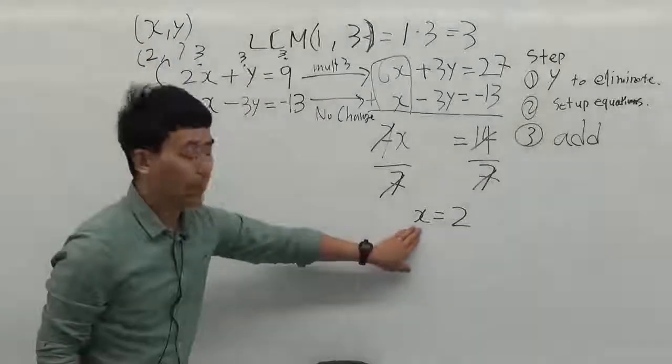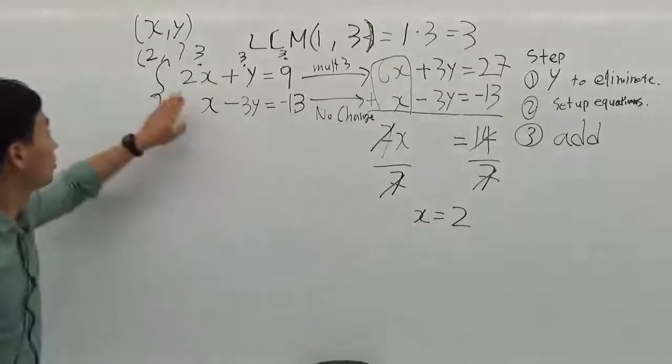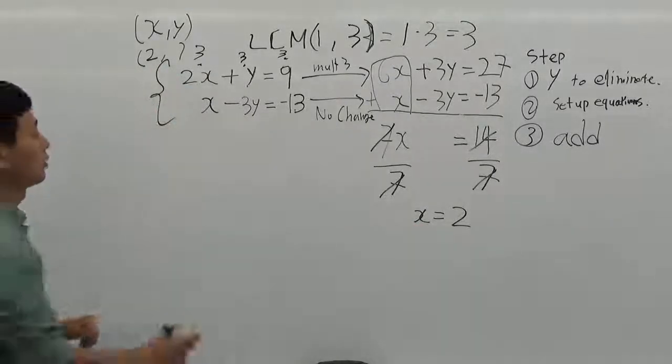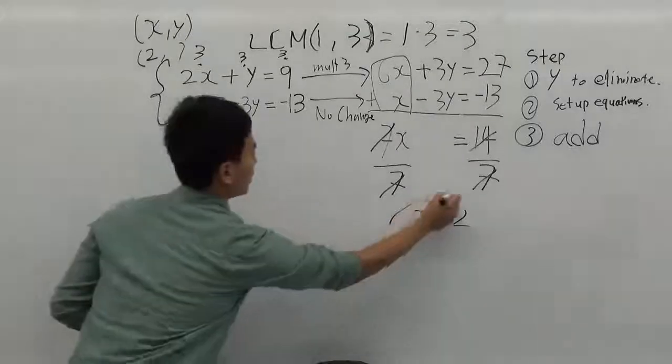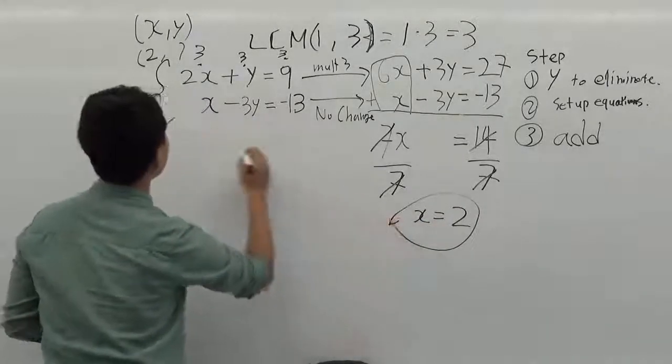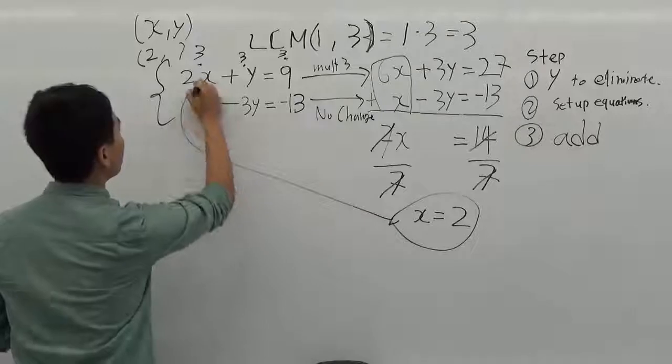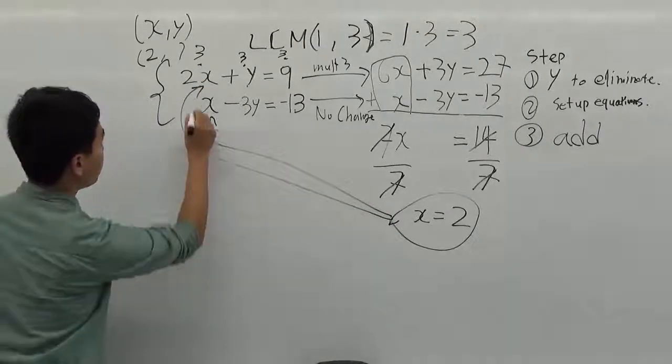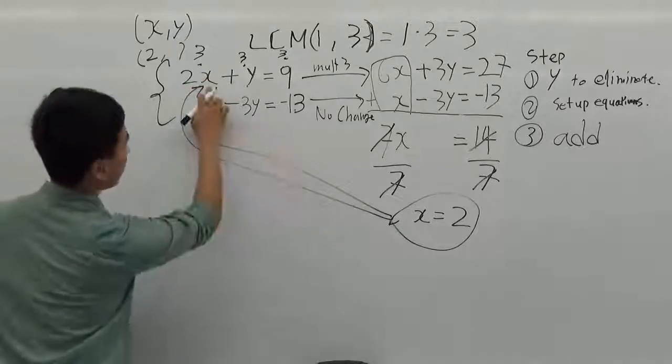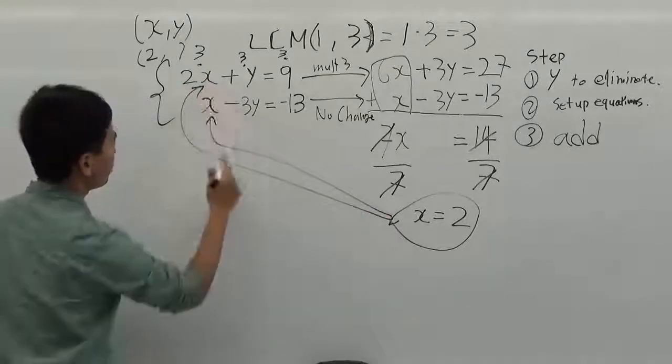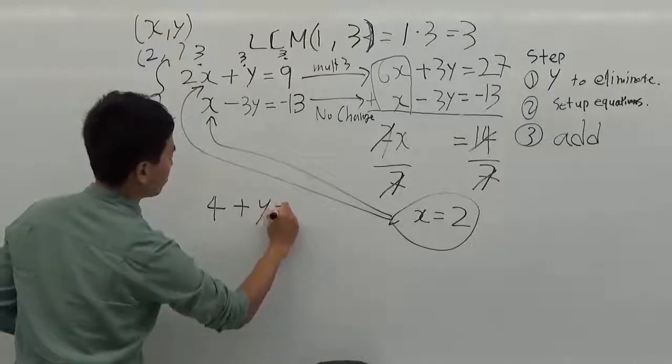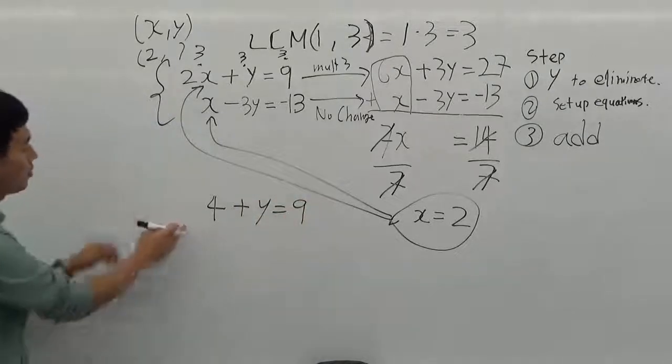So I'm going to use this x to plug into the first equation and second equation. If I plug in this x here and here, it will be 2 times x is 2. So 2 times 2 will be 4 plus y equals 9. This is the first equation. I just plugged the 2 into the x.